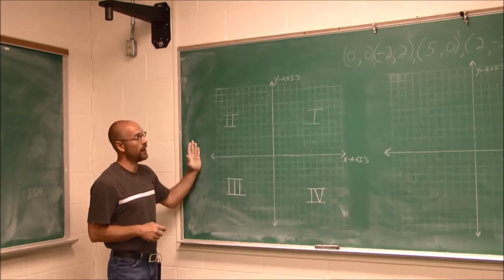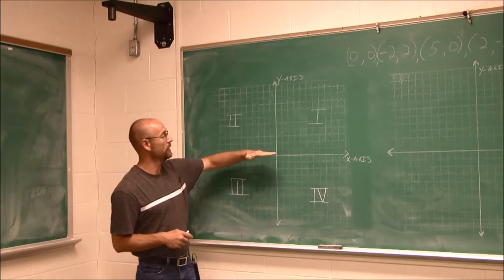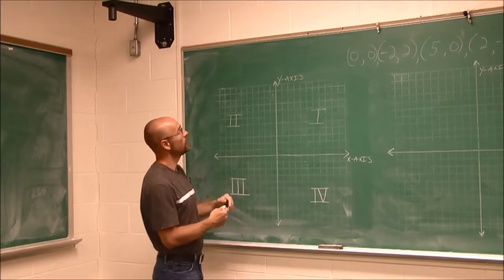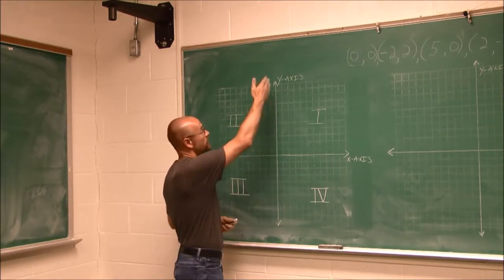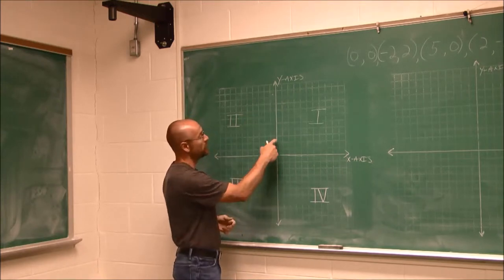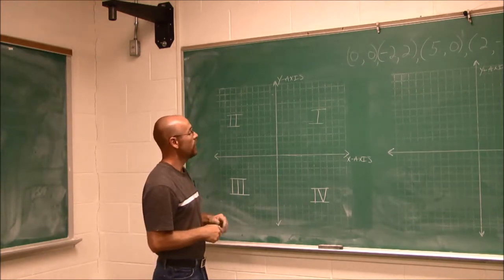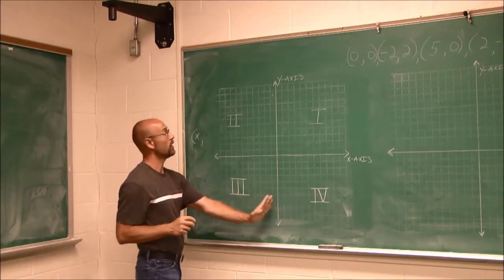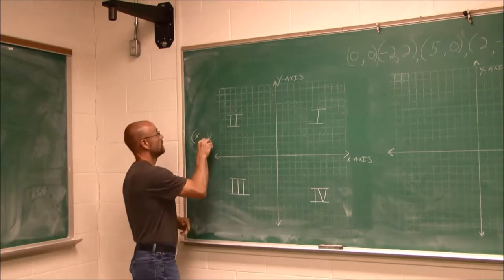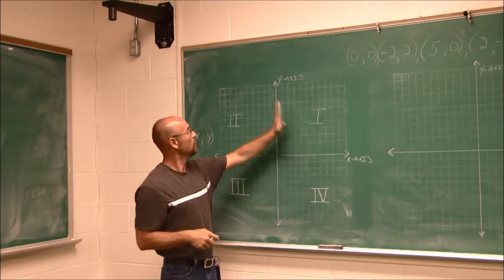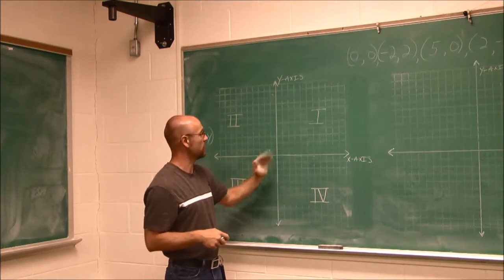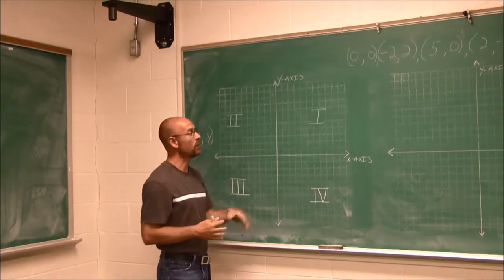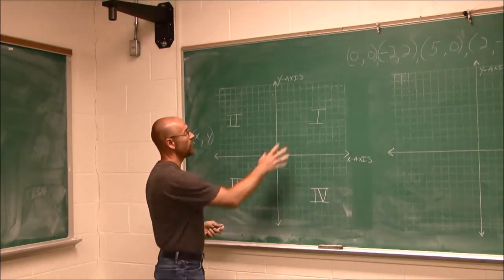Here we have the Cartesian coordinate plane, and it's divided by two lines. We think of these as number lines. We're familiar with a horizontal number line, but now we're going to introduce another number line — a vertical number line. Each of these tick marks would be 1 or 2 or whatever scale we're using. We call this one the x-axis, which applies to the x variable. We call this one the y-axis, which applies to the y variable. When we put these two number lines intersecting — one horizontally, one vertically — it divides our graph into four sections called quadrants. Quad meaning four, so we have four quadrants.